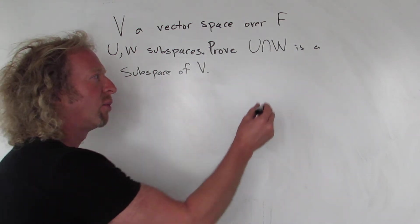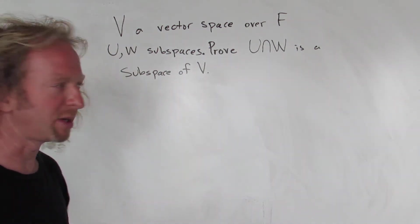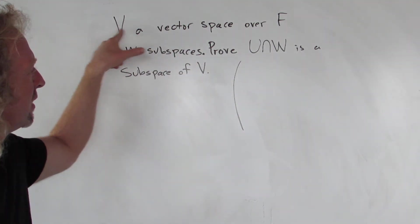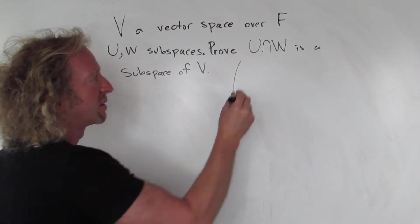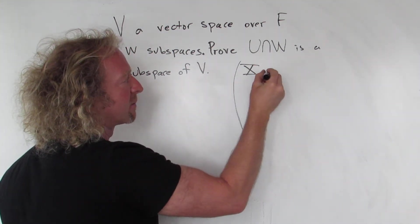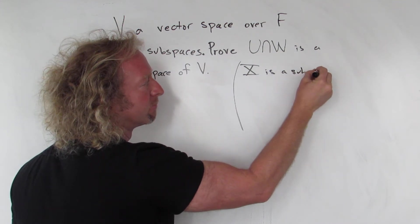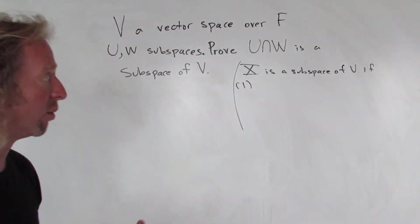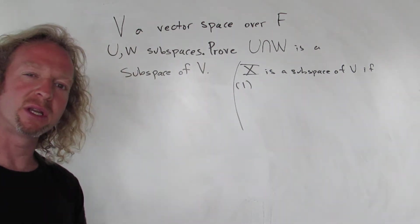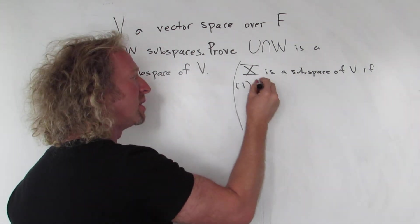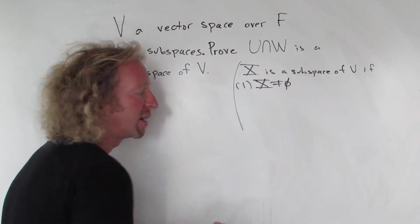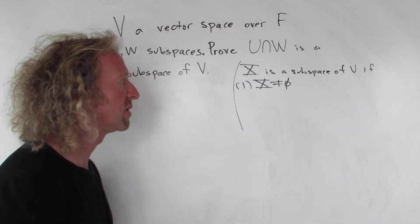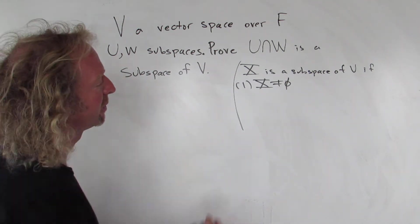So first, what does it mean for something to be a subspace of another vector space? I'm going to write that over here. Let's use capital X instead of U or W. So capital X is a subspace of V if the following three conditions hold. The first condition is that capital X should be a non-empty set. Usually you show this by showing that it contains the zero vector. Some textbooks replace this first condition with saying that capital X contains the zero vector.